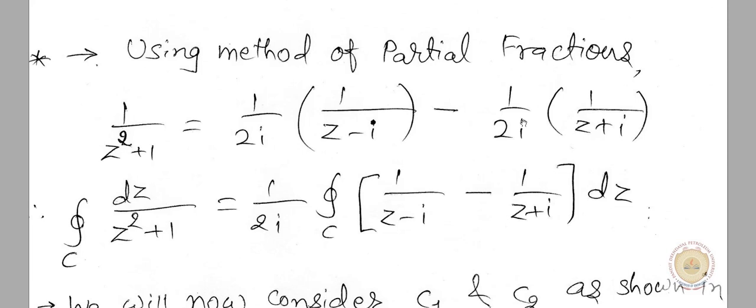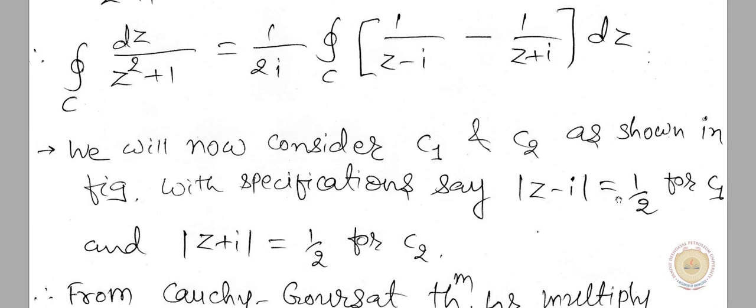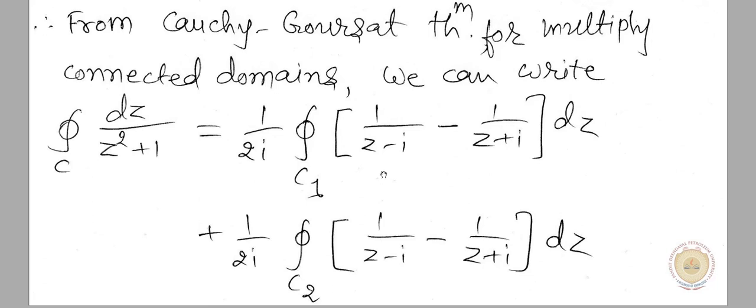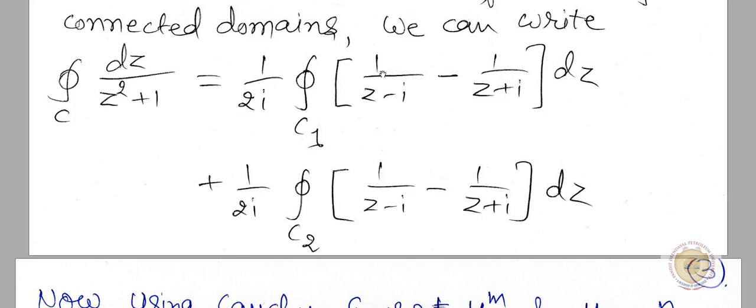Therefore our integral can be written as (1/2i) times the integration over C of [1/(z − i) − 1/(z + i)] dz. As shown earlier, C1 has specification |z − i| = 1/2 and C2 has specification |z + i| = 1/2. From the Cauchy-Goursat theorem, focus on two different integrals: integration over C1 and integration over C2. Adding these two gives the final result.